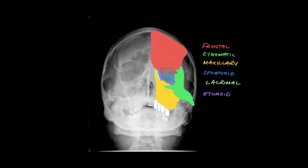The orbital floor is predominantly composed of bony supply from the zygomatic bone and the maxillary bone indicated here. The medial orbital wall is supplied by the ethmoid bone here, and its specific component is often referred to as the lamina papyraceae, separating the medial component of the orbit from the adjacent closely related ethmoid sinuses here.